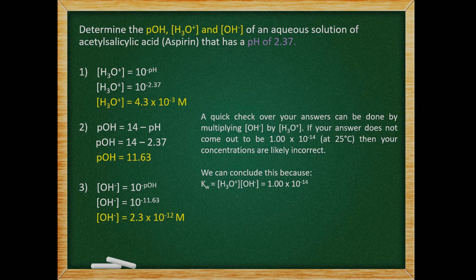Determine the pOH, hydronium concentration, and hydroxide concentration of an aqueous solution of acetylsalicylic acid that has a pH of 2.37. To get the hydronium concentration, we take 10 to the power of our negative pH. Because there are two decimal places, we get an answer with two sig figs. We get our pOH by subtracting the pH from 14. For our hydroxide concentration, we just take 10 to the power of the negative pOH value we just got. We can quickly check our answers by multiplying the hydroxide concentration by the hydronium concentration — if our answer does not come out to be 1 × 10⁻¹⁴, then it's likely we did something wrong.